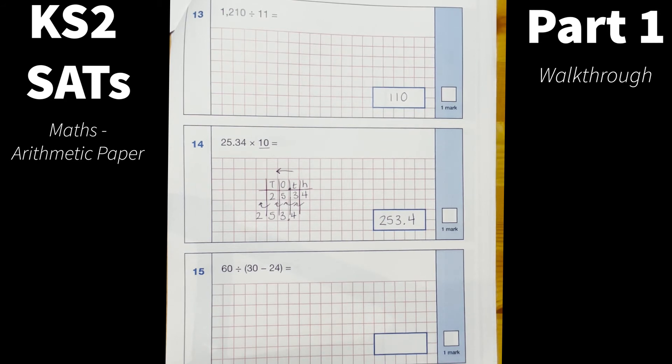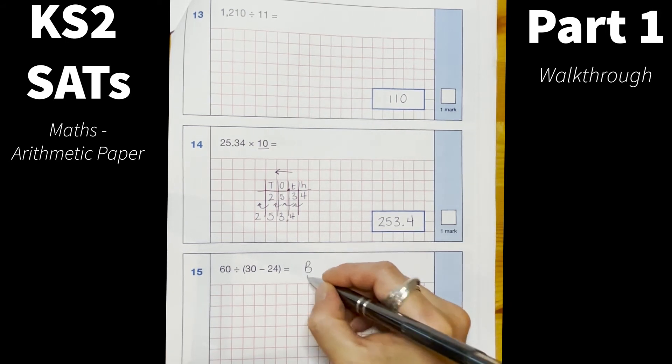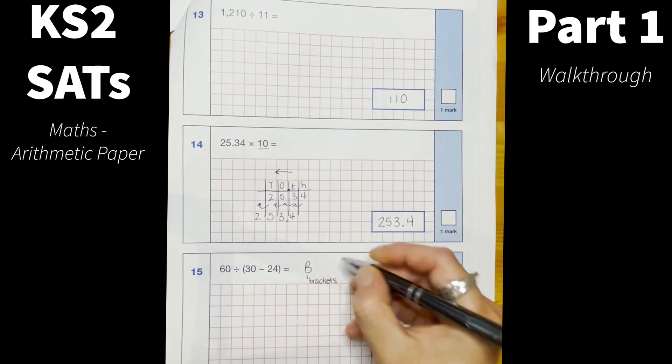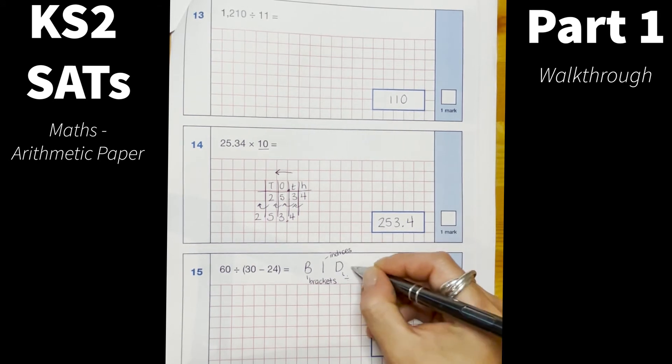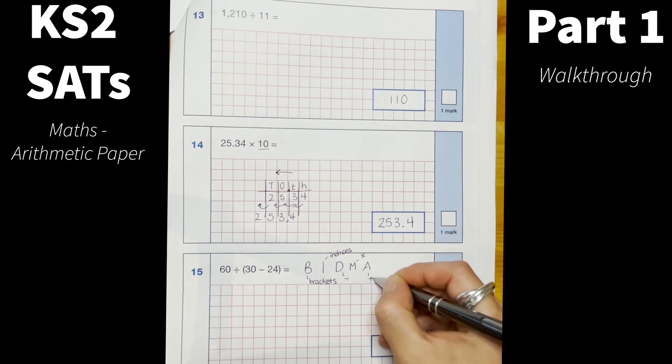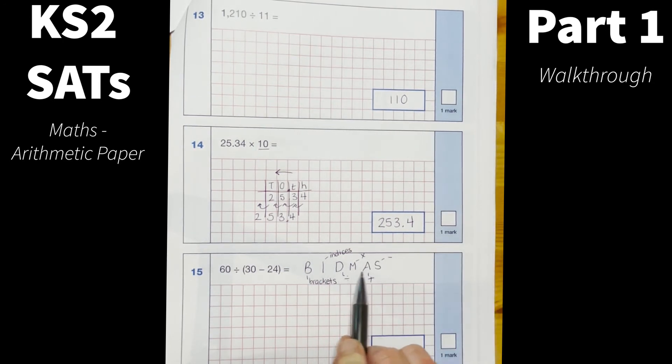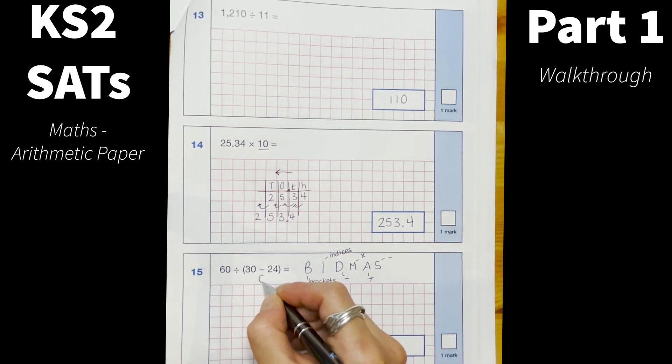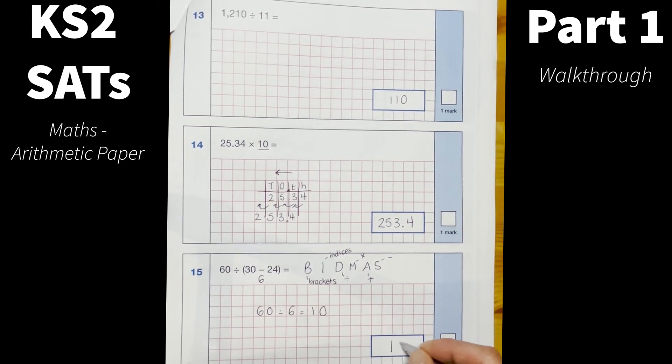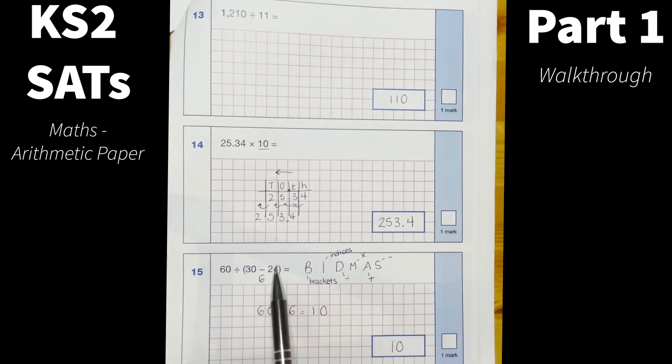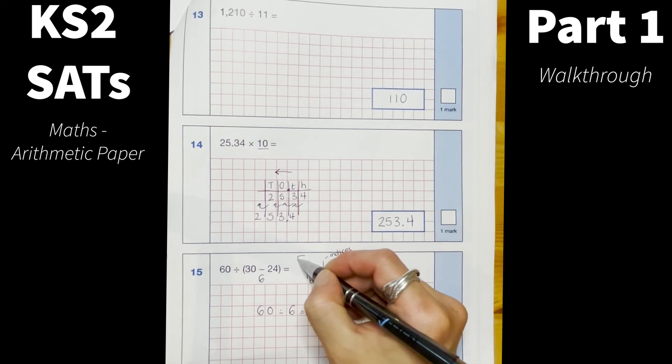Now number 15, as soon as I see my brackets I know that this is going to be BIDMAS or BODMAS. So brackets, B stands for brackets, I stands for indices so that's going to be squared numbers, D is for division, M is multiplication, A is addition and S is subtraction. So this is the order in which I need to do my calculations. So I can see brackets there straight away so I know I need to work out whatever's in my brackets first. And I know that 30 take away 24 equals 6, and then I'll need to do 60 divided by 6 which I know will give me 10. A misconception here is that children might not do what's in the brackets first, they might do 60 divided by 30 and subtract 24. It's just important to know the order of operations.